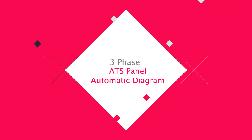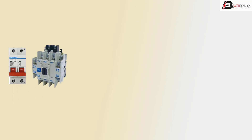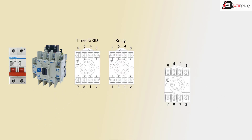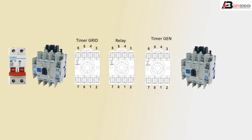Hello viewers, today I discuss the three-phase ATS panel automatic diagram. Let's get started. First: MCB, DP circuit breaker (double pole circuit breaker), magnetic contactor, timer, grid line relay timer, and generator magnetic contactor.